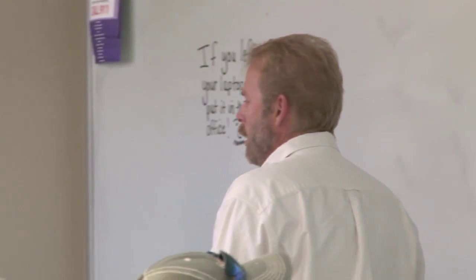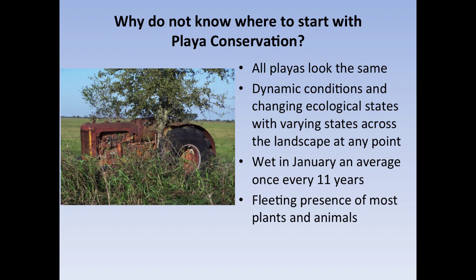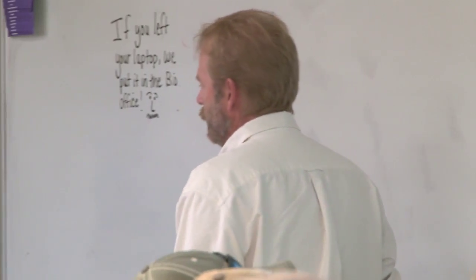Why don't people know what to do with playa conservation? All the playas look the same — they're all small circular wetlands that appear identical on an individual basis. How do you prioritize with dynamic conditions and changing ecological states across the landscape? At any point in time, a playa that is wet one year can be dry the next, across that entire gradient from Texas to Nebraska. Most playas are wet in January on average once every 11 years. There's a fleeting presence of most plants and animals, making it very difficult to establish indicators of biological importance.